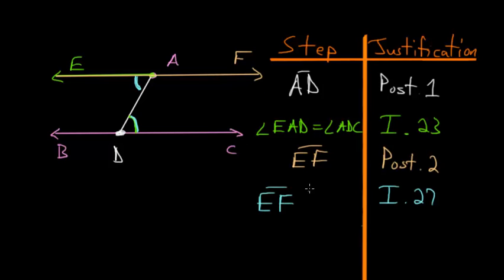In conclusion, line EF is parallel to line BC, and this was exactly our goal—we wanted to construct a line parallel to BC through point A. So we can end this with QEF.